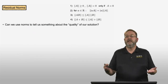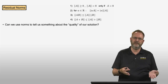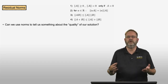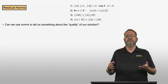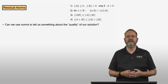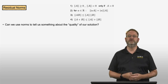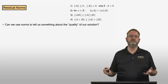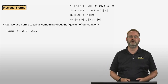In a prior video we introduced norms — the norm of a vector, the norm of a matrix — and the whole point of this was in the end to have a measure of telling us what the quality of our solution to our system of linear equations will be. So can we use norms to tell us something about this quality of our solution?